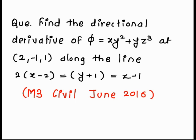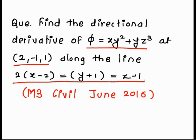Find the directional derivative of phi at point (2, -1, 1) along the line 2(x-2) = y+1 = z-1. First of all, we underline the keywords: the given function phi, the point, and the line equation. This question was asked in an M3 question paper, Civil Branch, June 2016. Compared to part 1 and part 2, here we need to find the equation of the line as a vector using the given line equation with one point and the DRS.